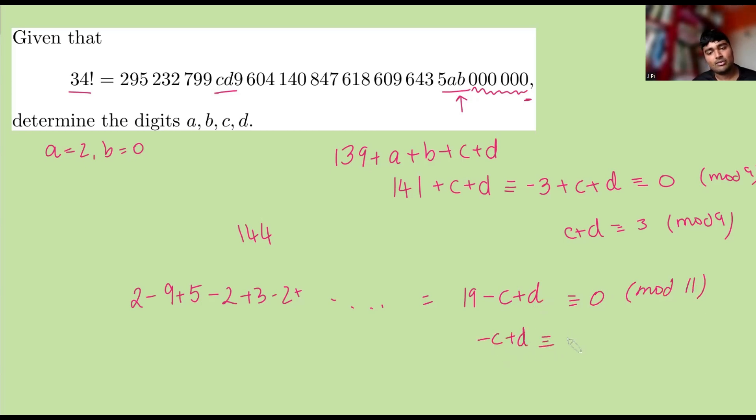And minus 19, well, 19 is the same as minus 3 mod 11 because 22 is a multiple of 3. So minus 19 will be minus minus 3. So that would be 3 mod 11. So we need C plus D to be 3 mod 9 and minus C plus D to be 3 mod 11.